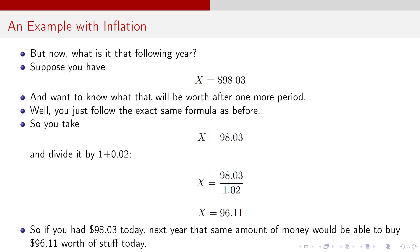Now, what about that following year? Suppose you have, well, now X equals 98.03, and you want to know what it's going to be worth after one more period. So you're holding it for two years instead of just one. Well, what do you do? Well, you take 98.03 and divide it by 1 plus .02, or 1.02, and you get $96.11. So if you had $98.03 today, next year, that same amount of money would be able to buy only $96.11 worth of stuff today.